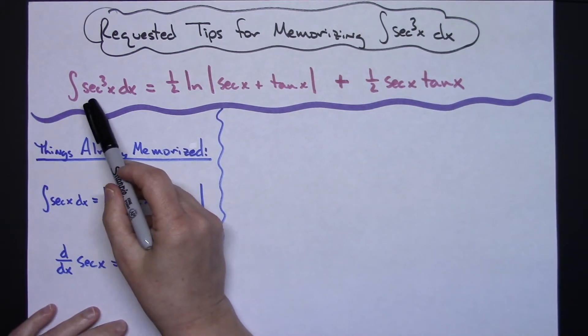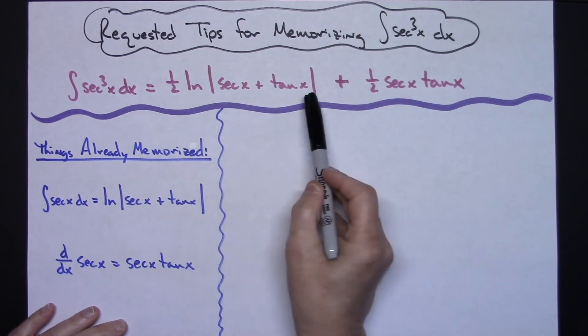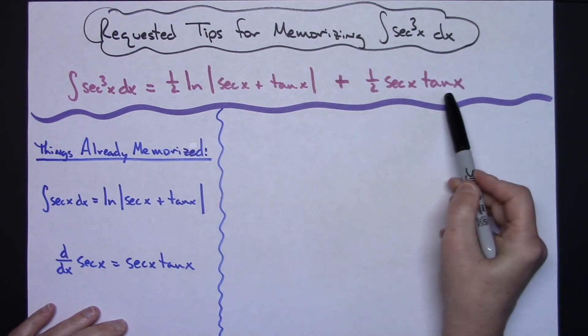The integral of secant x to the third dx is one-half natural log absolute value secant x plus tangent x plus one-half secant x times tangent x.